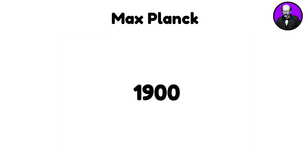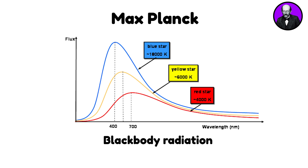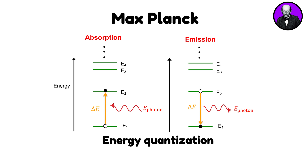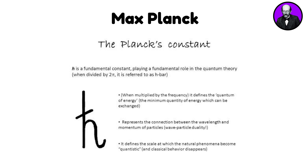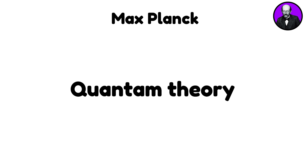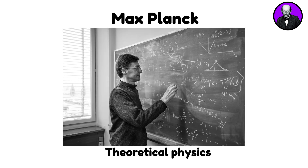In 1900, while investigating blackbody radiation, Planck introduced the revolutionary idea that energy is quantized, proposing that it could be emitted or absorbed in discrete units, which he called quanta. This led to the formulation of Planck's constant, H, a fundamental constant that relates the energy of a photon to its frequency. This groundbreaking work marked the inception of quantum theory, a pivotal development in theoretical physics.